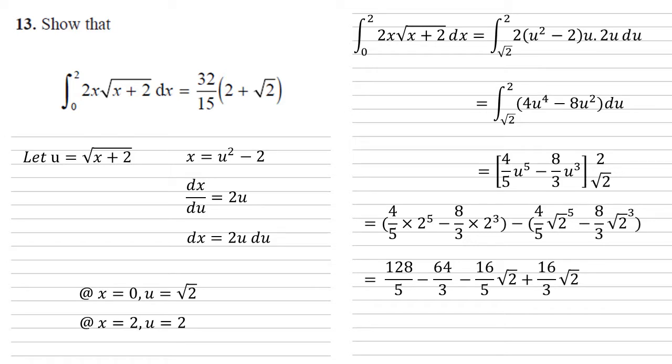Simplifying each of the terms and removing the brackets gives us 128 over 5 minus 64 over 3 minus 16 fifths root 2 plus 16 thirds root 2. Simplifying this gives us 32 fifteenths times 2 plus root 2 as required.